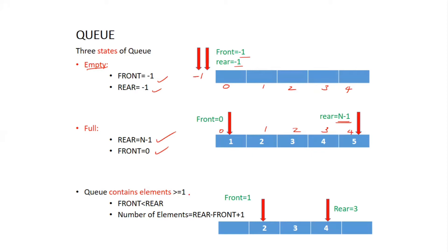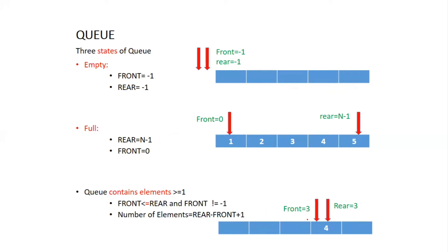The next state is when the queue contains elements — one or more elements. For example, if front points at index one and rear points at index three, then front is less than rear. The number of elements can be calculated as rear minus front plus one. So three minus one plus one equals three total elements. This is how you calculate the number of elements in a queue.